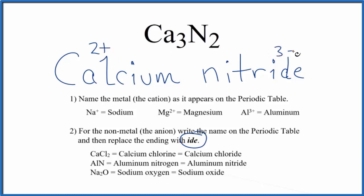Nitrogen, three minus. So this is a neutral compound. All the charges need to add up to zero. Two times three, that's six plus. Two times three minus, that's six minus. These cancel out, add up to zero. So the formula for calcium nitride is Ca3N2.